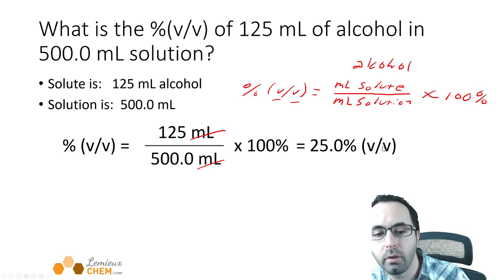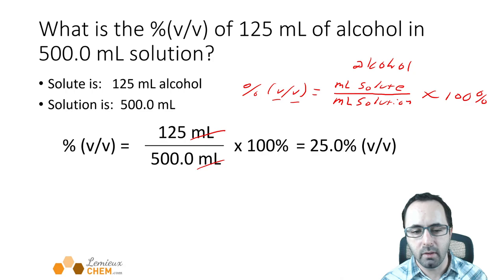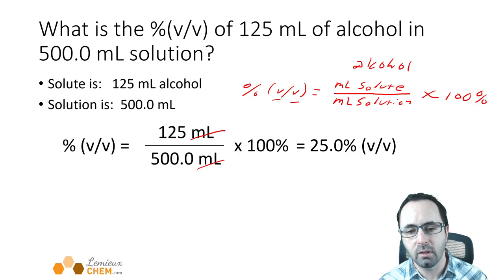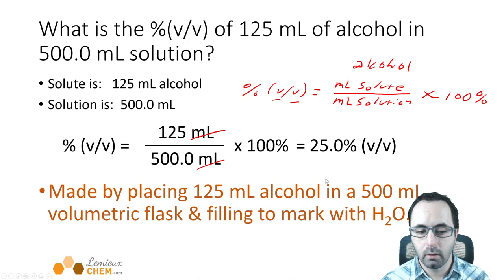If you're in a grocery store and see a bottle of rubbing alcohol or vodka, the label will state the percent by volume. If you're in a doctor's office looking at syringes, you'll see these types of concentrations stated — they may be mass/mass percentages, volume percentages, or mass over volume percentages. All of those are seen.